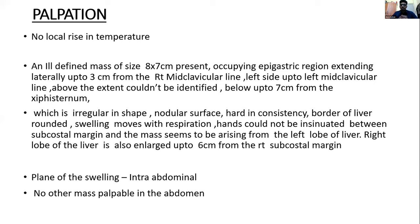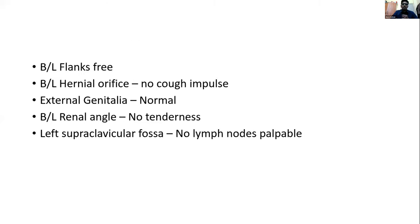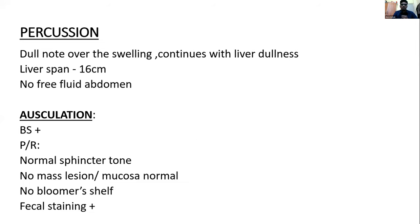The right lobe of the liver is also enlarged up to 6 cm from the right subcostal margin. The plane of the swelling is intra-abdominal. No other mass palpable in the abdomen. Bilateral flanks free. No cough impulse. On percussion, dull note over the swelling present, which is continuous with the liver dullness. Liver span 16 cm. No free fluid.